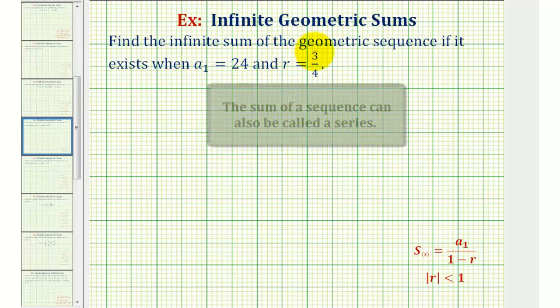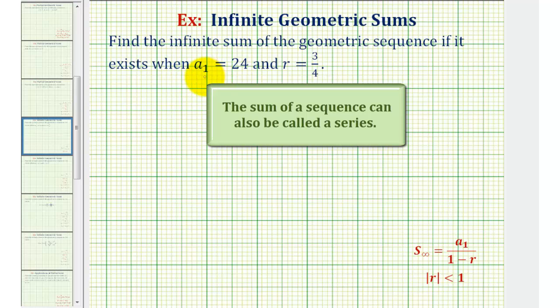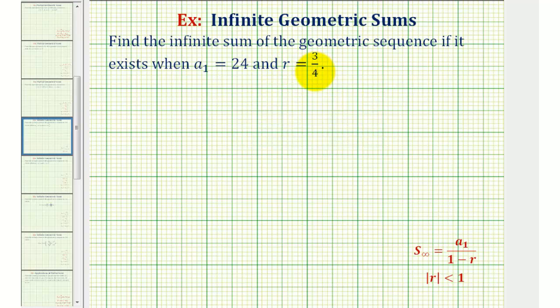We want to find the infinite sum of the geometric sequence if it exists when a sub one, the first term, is equal to 24 and r, the common ratio, is equal to three-fourths.